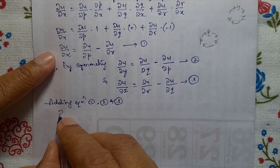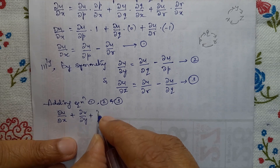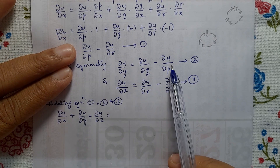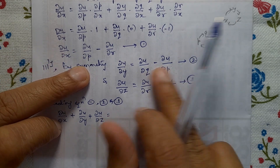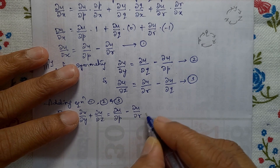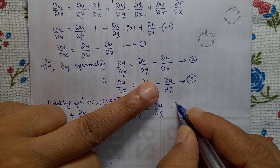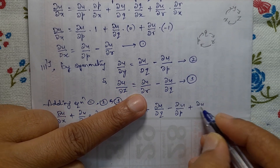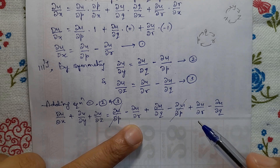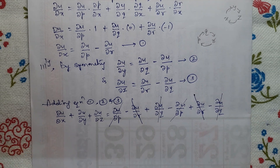Adding equations 1, 2, and 3: ∂u/∂x plus ∂u/∂y plus ∂u/∂z equals (∂u/∂p minus ∂u/∂r) plus (∂u/∂q minus ∂u/∂p) plus (∂u/∂r minus ∂u/∂q). The terms ∂u/∂p and minus ∂u/∂p cancel, minus ∂u/∂r and plus ∂u/∂r cancel, and ∂u/∂q and minus ∂u/∂q cancel.